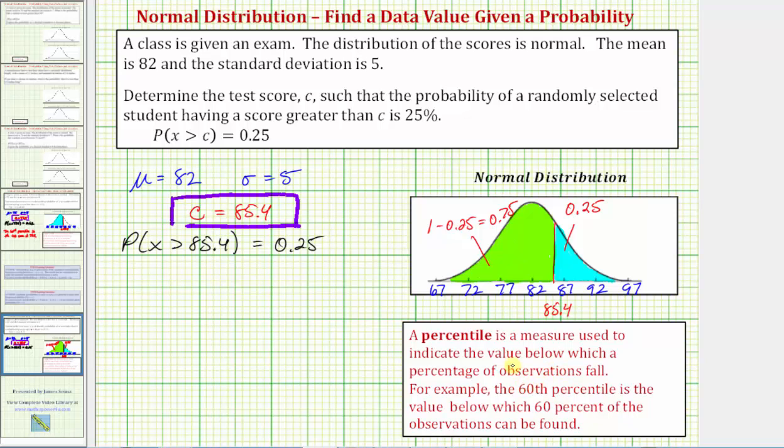So in this case, because 75% of the scores fall below 85.4, we can say the 75th percentile, in this case, corresponds to the test score of 85.4. I hope you found this helpful.